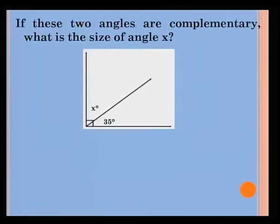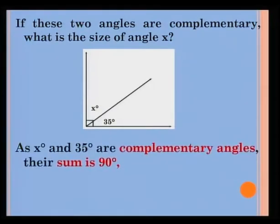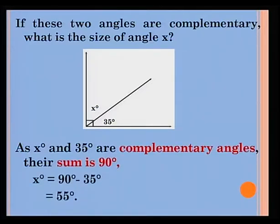If these two angles are complementary, what is the size of angle X? As X degrees and 35 degrees are complementary angles, their sum is 90 degrees. Therefore, the value of X will be 90 degrees minus 35 degrees, which is equal to 55 degrees.